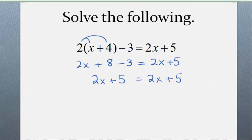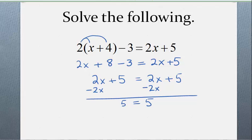But let's say you didn't notice they were exactly the same and you went through the process of trying to solve this. You'd have to subtract 2x from both sides. On the left side all of your x's go away, and on the right side all of your x's go away. What you have left is just numbers, and you have a true statement. So if you have a true statement, the equation is an identity, and we say the solution is all real numbers.